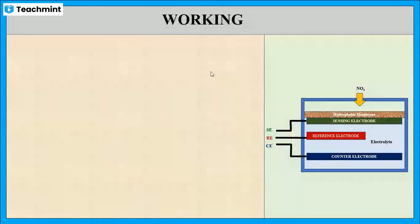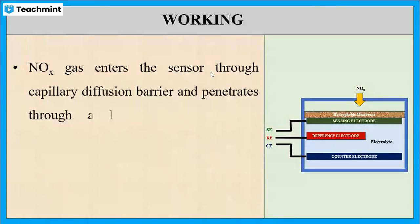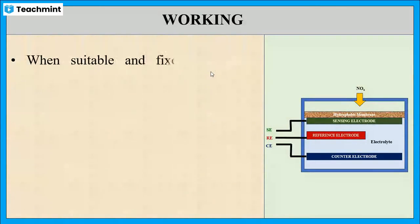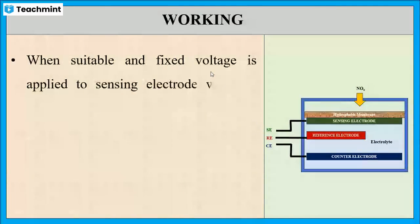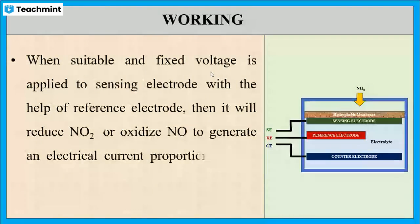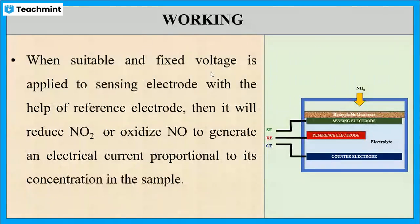Now let us see the working. As I have mentioned, the oxides of nitrogen enter the sensor through the hydrophobic membrane and get absorbed on the surface of the working electrode. When suitable voltage is applied to the working electrode using the reference electrode, it will reduce nitrogen dioxide or oxidize nitrogen oxide to generate an electrical current which is proportional to the concentration of the gas.